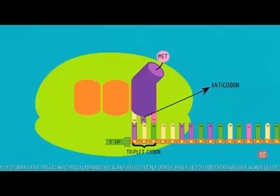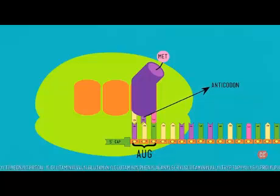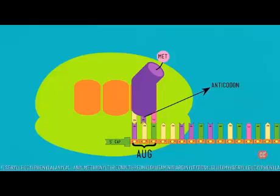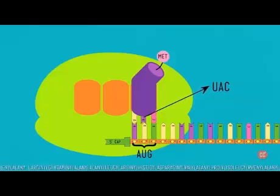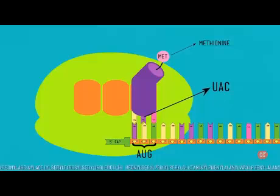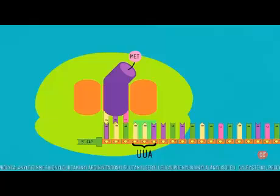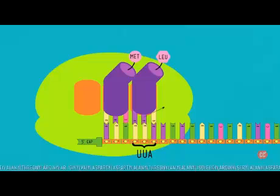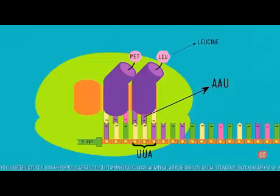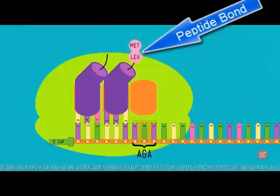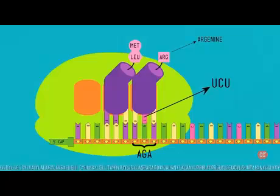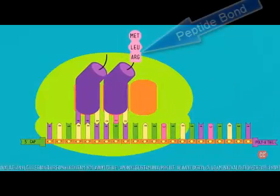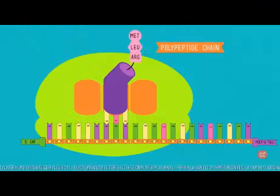Starting at the five-prime end of the mRNA, after the five-prime cap, you find the sequence AUG. The ribosome finds a tRNA with the anti-codon UAC, and on the other end is methionine. The mRNA keeps sliding into the ribosome so the next codon can be read and another tRNA with the right anti-codon binds. If the codon is UUA, the matching tRNA has AAU and carries leucine; if the mRNA has AGA, the matching tRNA has UCU and carries arginine. Each new amino acid connects to the previous one, starting a polypeptide chain — the very beginning of a protein.